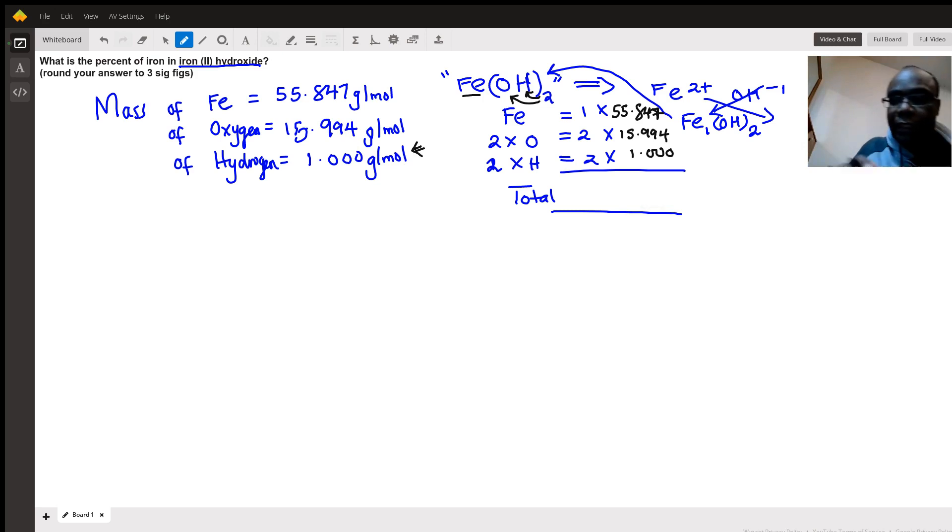So let's do that multiplication and then add them. So 55.847. Your periodic table could have a slightly different number, but just know the percent will be very similar. Okay, so we are adding that to twice the mass of oxygen.